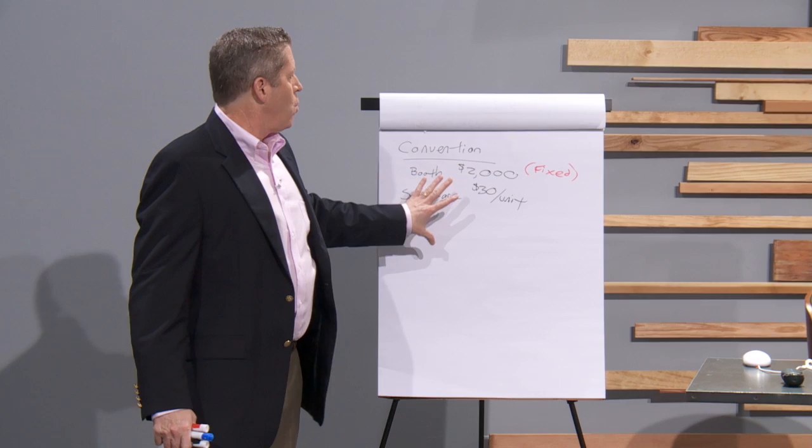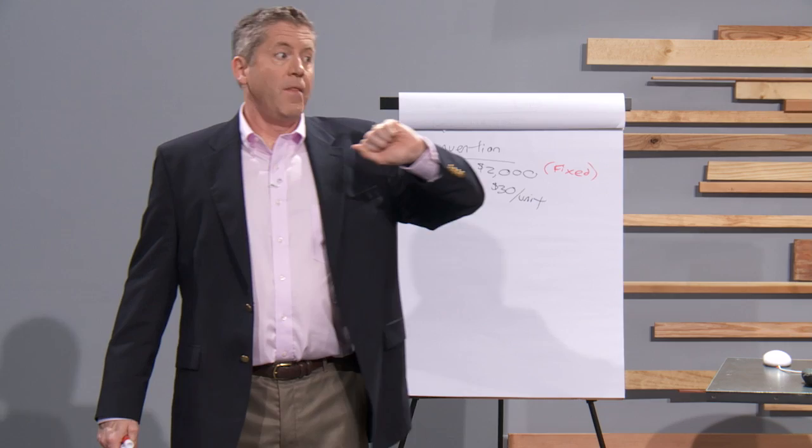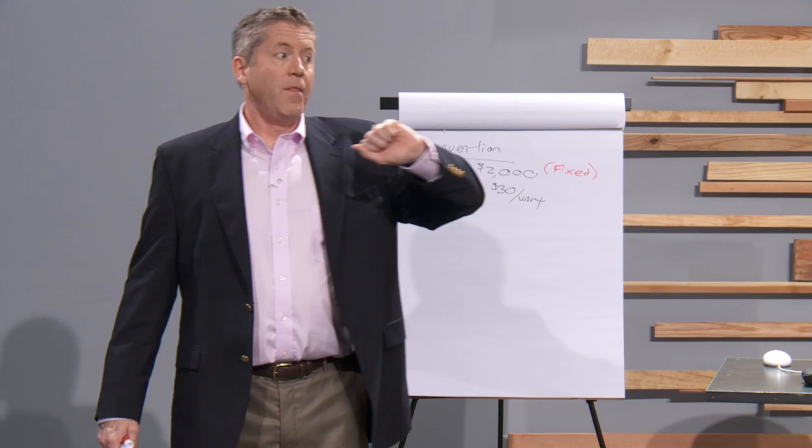That may seem trivial — why does that matter? When you start doing a formula that has both dollar amounts and units of product, you've got to label the numbers or you're going to get confused.